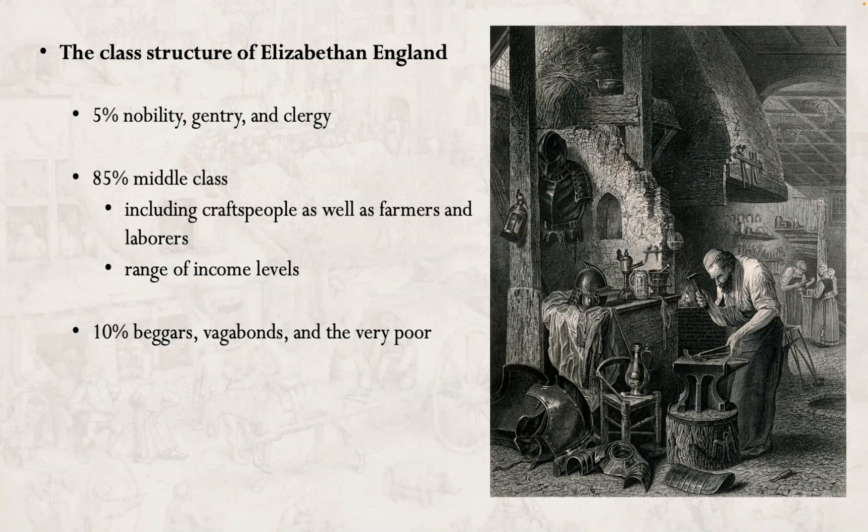The first place to start is with the class structure of Elizabethan England. The population consisted of five percent nobility, gentry, and clergy — the people who had a lot of money and were the most wealthy. Maybe they had inherited landed titles through many generations, going all the way back to the Norman Conquest and even before that. There were also people who had a lot of land even if they weren't technically noble, and land was extremely valuable back then for many reasons.